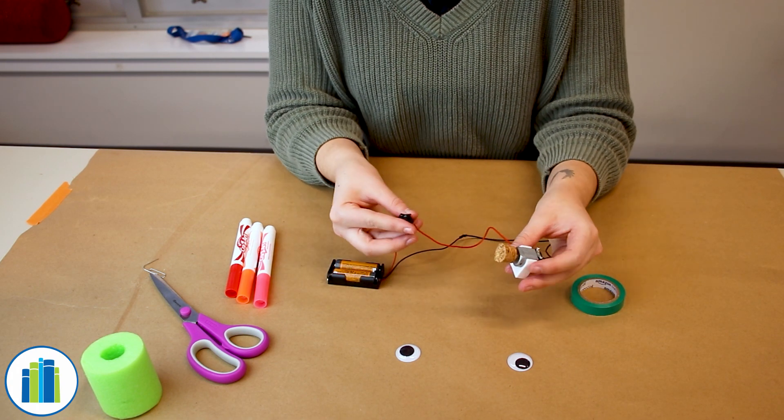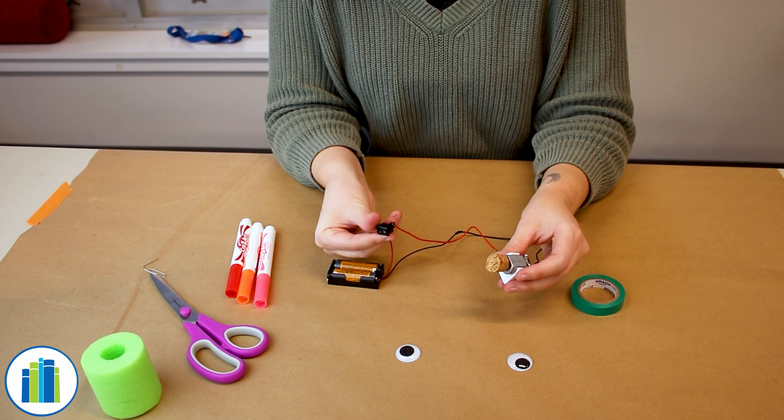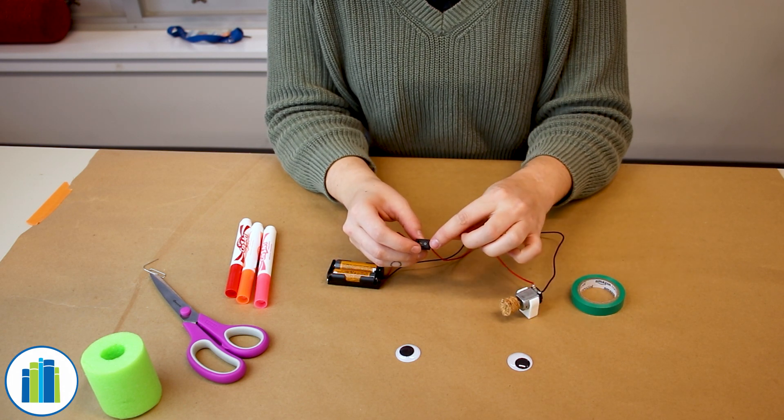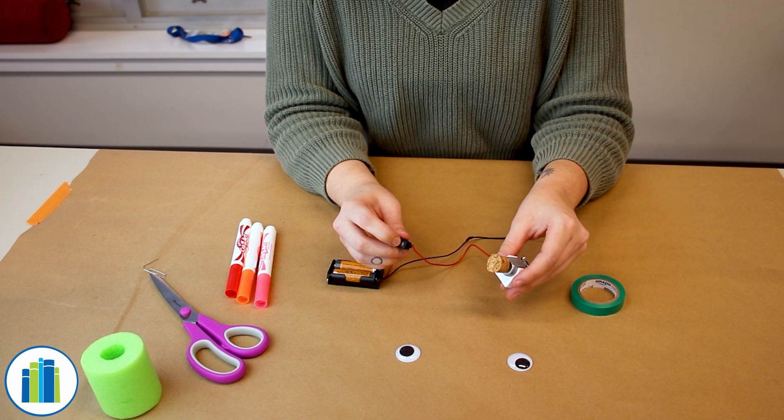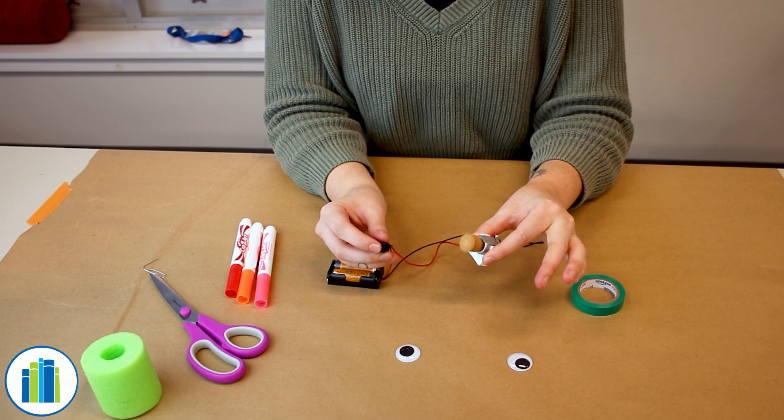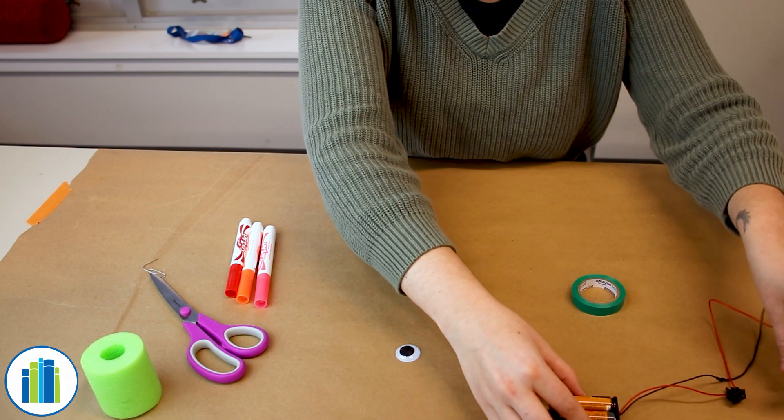Now we're going to test to make sure that the motor works with the cork in it. So you'll press the switch. Off is the circle and on is the line, so turn it to the on side. Okay, so the motor works. So we're going to set it aside for a second.